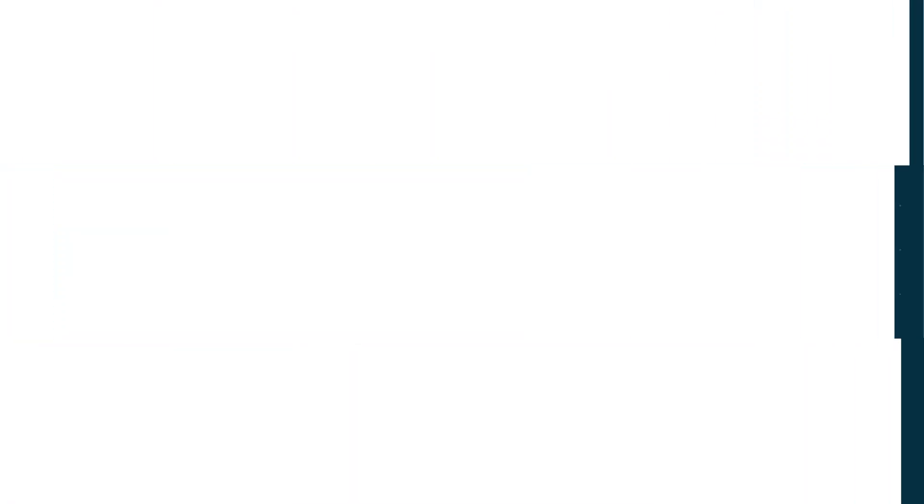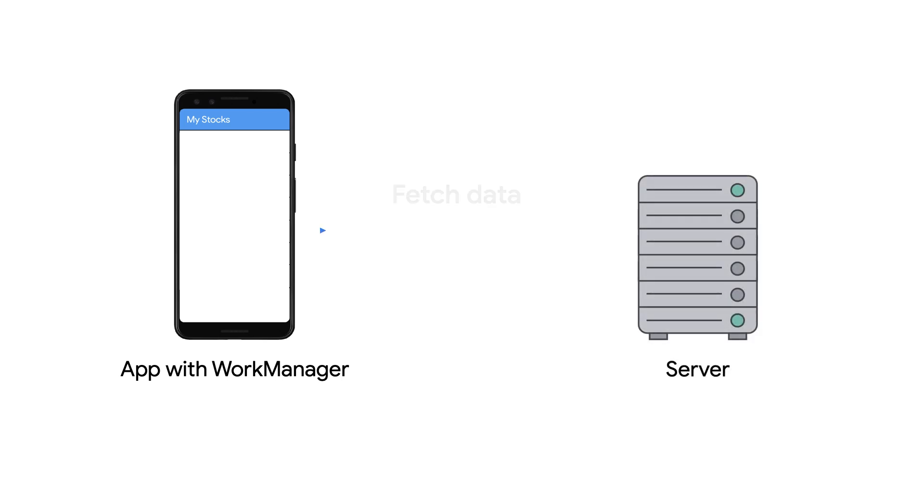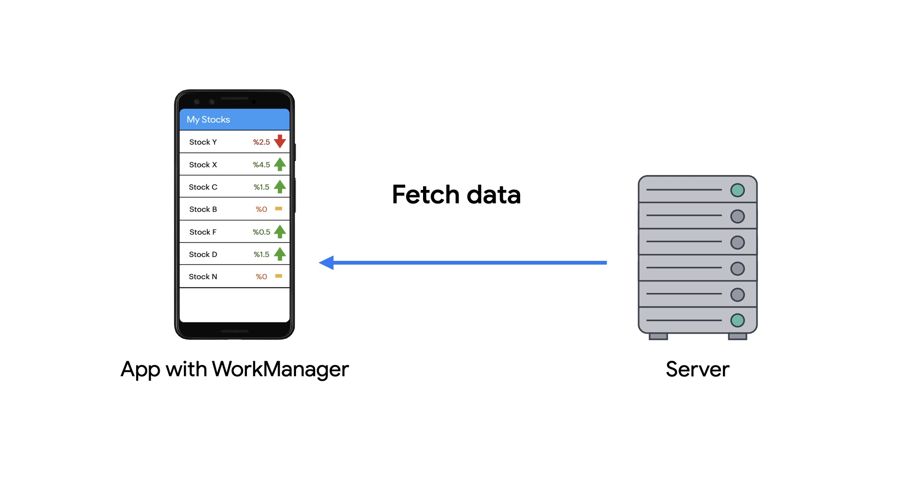This is where WorkManager comes to the rescue. WorkManager is part of Android Jetpack, and it's backwards-compatible all the way back to API level 14. With WorkManager, you can schedule work that's guaranteed to be executed. For example, you can use WorkManager to schedule a task to fetch data from the server so that the next time the user opens the app, the app can display newly loaded content without any delay. WorkManager also takes care of the logic to start your task under a variety of situations, even if the app is closed or the device restarts.